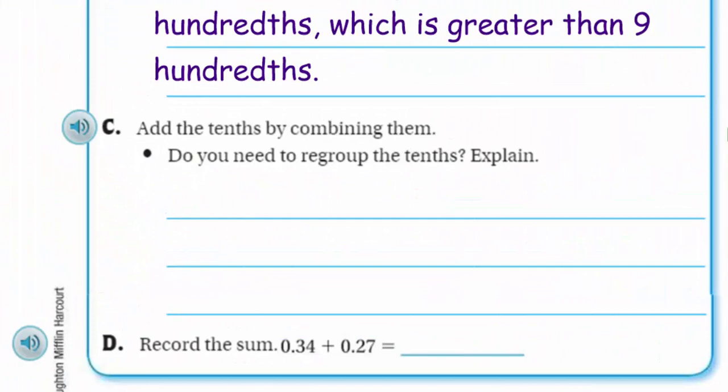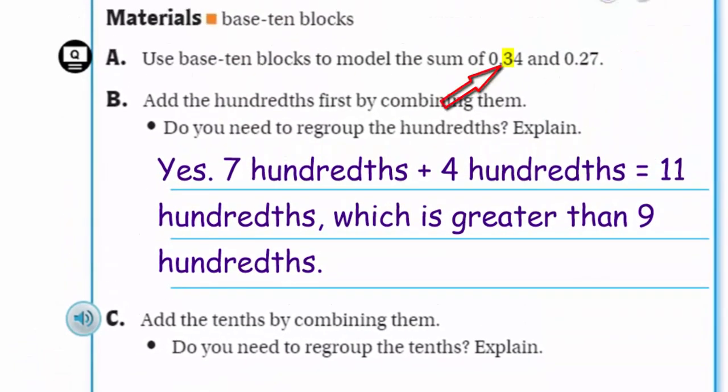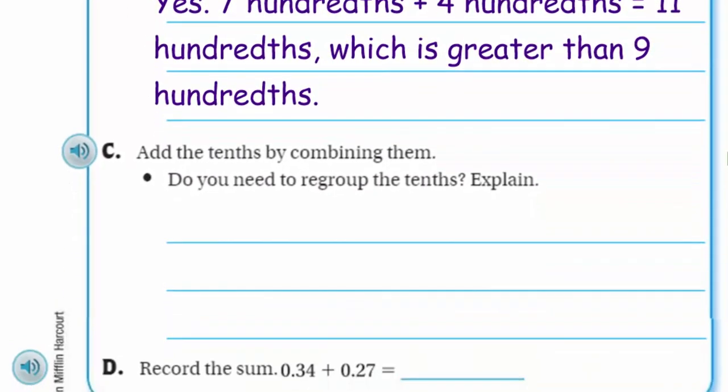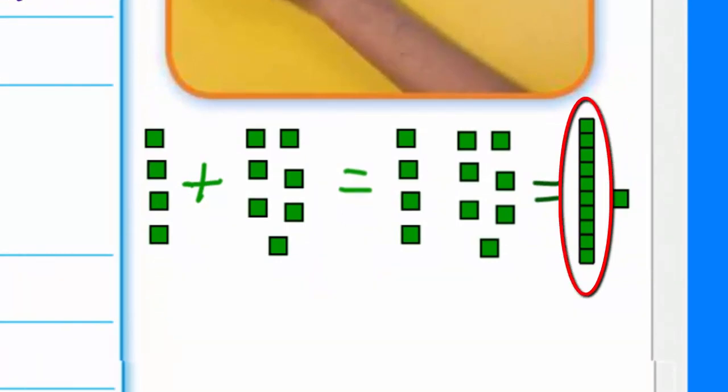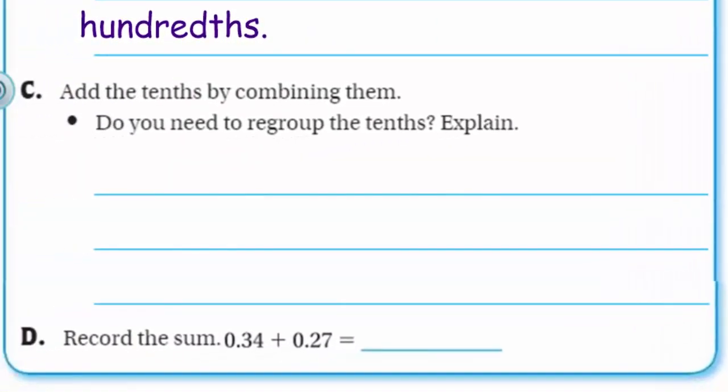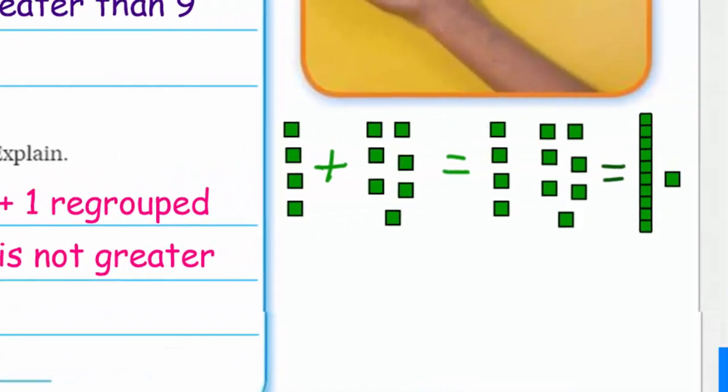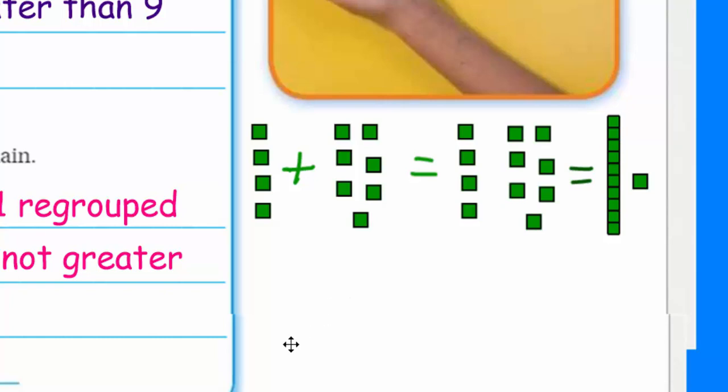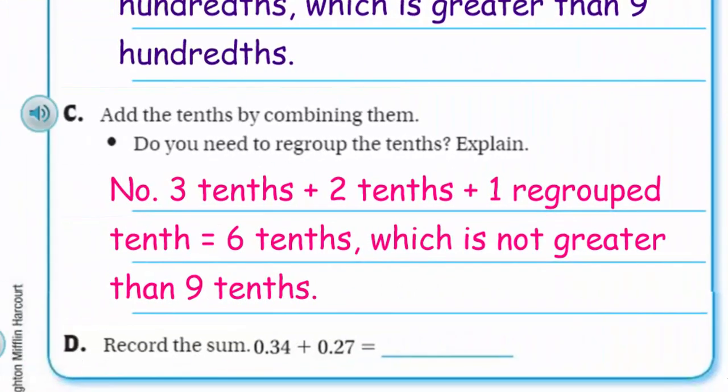So let's show that with our hundredths. I have the 4 hundredths and I'm adding 7 hundredths, that's going to give me 11 hundredths. What I can do now is I can regroup and take 10 of those hundredths and make 1 tenth. So really this is equal to 1 tenth with 1 hundredth, so I was able to regroup.